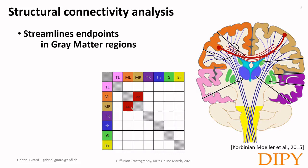At this point you could assign different values to that connection. It could be the number of streamlines connecting those two regions, or it could be a diffusion MRI measure along those streamlines. For example, you could average all the red streamlines, compute the FA along each streamline, take the average, and use that average value in the matrix. However, most often we use a streamline count.